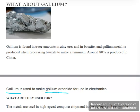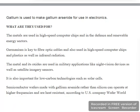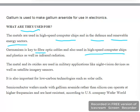Gallium is used to make gallium arsenide for use in electronics. These metals have wide applications in high-speed computer chips, defense, and renewable energy sectors. Germanium is key to fiber optic cables and is used in high-speed computer chips and infrared applications. The metal and its oxides are used in military applications like night vision devices and satellite imagery sensors.